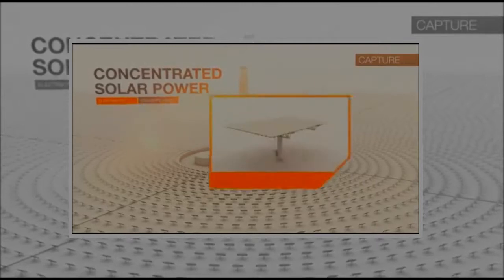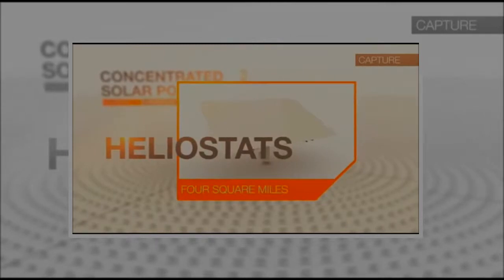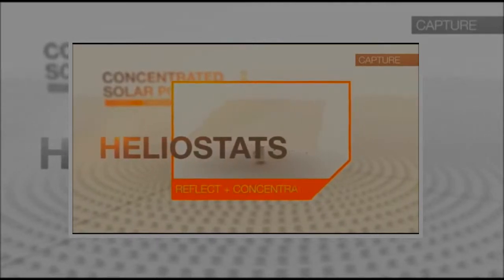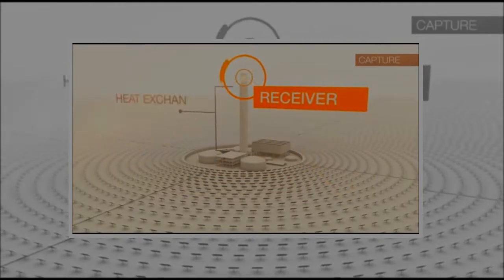More than 10,000 tracking mirrors called heliostats reside in a four-square-mile field where they reflect and concentrate sunlight onto a large heat exchanger called a receiver that sits on top of a 550-foot tower.